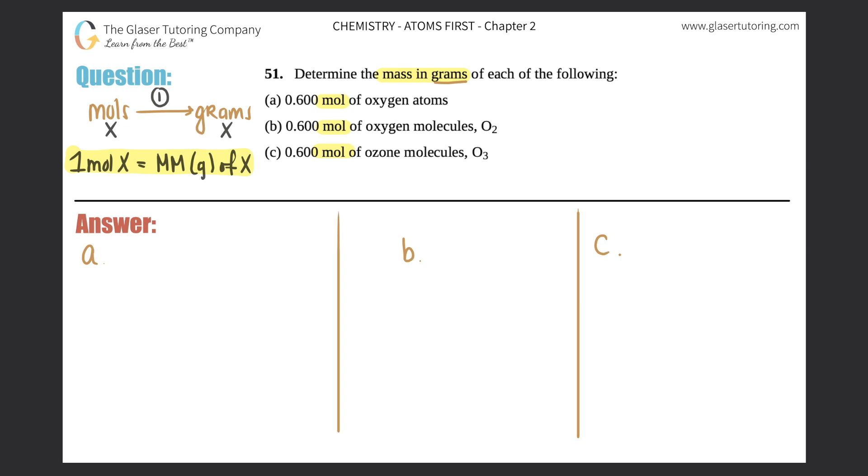For part a, let's start. They're giving us 0.600 moles of oxygen atoms. Now that's the trick—what do they mean by oxygen atom? An atom is just a single element or a single box on the periodic table, so this would just be O. If I draw the box for what oxygen looks like on the periodic table, it's just oxygen.